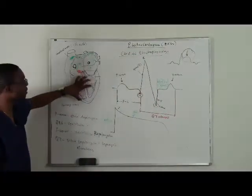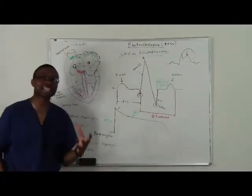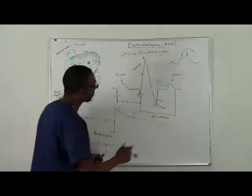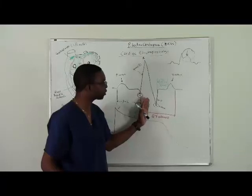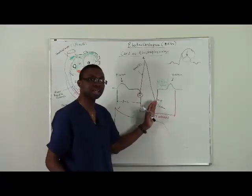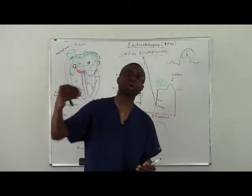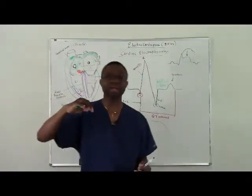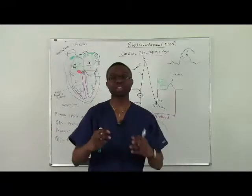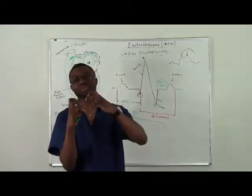So when the ventricles depolarize, right, it takes time for them to contract. What happens is that is the plateau phase. The plateau phase is when the ventricles are depolarized after the QRS complex, then the calcium actually has to go to the cardiac myocytes, go through the sarcomere, right, and eventually bind to the troponins and myosins to cause contraction.